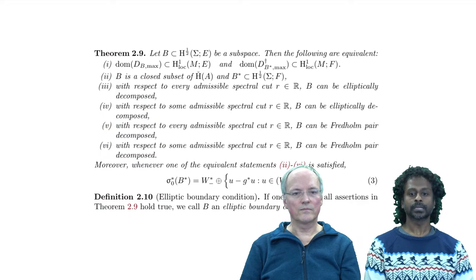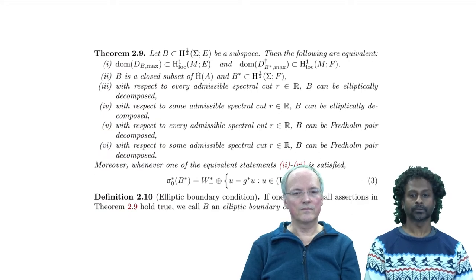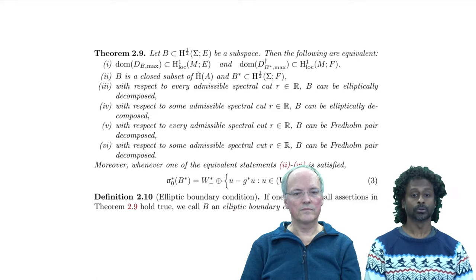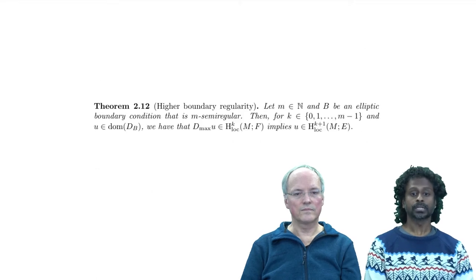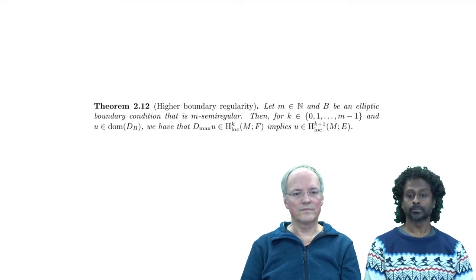We demonstrate several equivalent descriptions of elliptic boundary conditions. In particular, these need not be pseudo-local. Furthermore, we study the regularity of solutions up to the boundary.